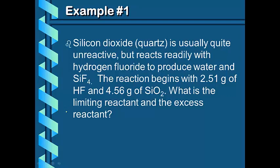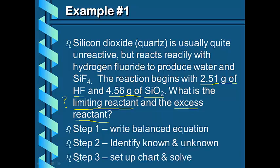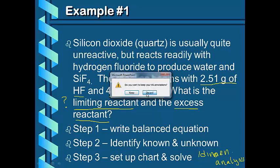All right, so how are we going to do a chemical version of this? Now we have silicon dioxide which is usually quite unreactive, but it does react with hydrogen fluoride, or hydrofluoric acid, to produce water and silicon tetrafluoride. The reaction begins with 2.51 grams of hydrofluoric acid, 4.56 grams of silicon dioxide. They want to know what's the limiter and what's the excess. So, there's three ways to do this. Step one is to write the balanced equation. Step two is to identify the known and the unknown. Step three is to set up the chart or do dimensional analysis, although I'm going to show you the chart here, and solve for it. So, what you may want to do at this point, if you've not already done so, is take out a periodic table, take out a calculator, and potentially also take out your ion sheet. And I'm going to go ahead and switch over to a notebook file, so that you can actually see me solve these problems.